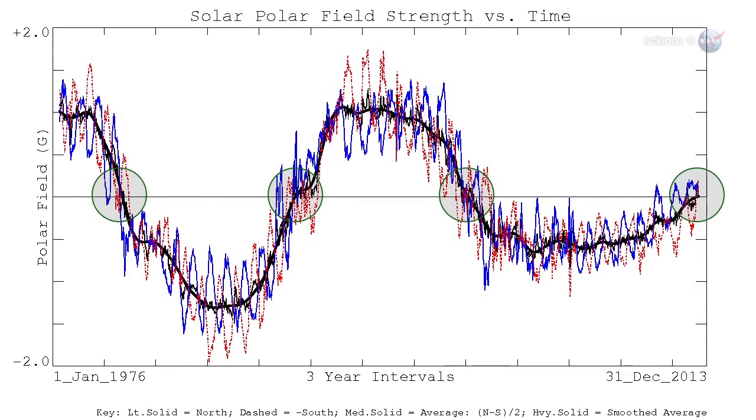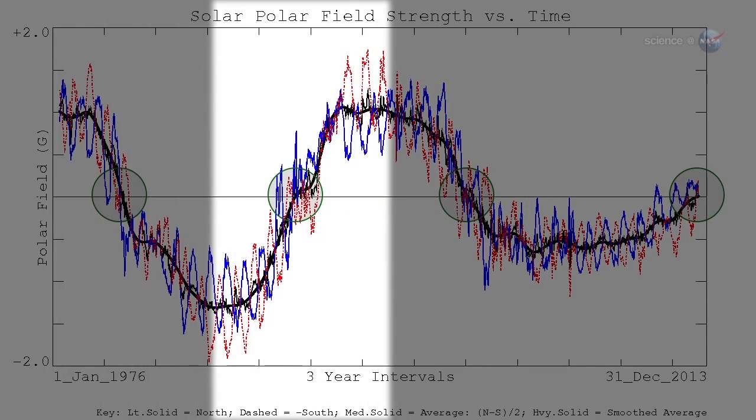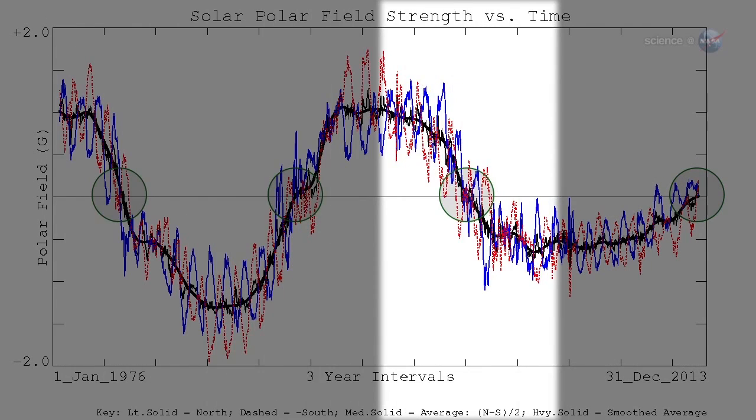Magnetograms at Wilcox have been tracking the Sun's polar magnetism since 1976, and they have recorded three grand reversals, with a fourth in the offing.